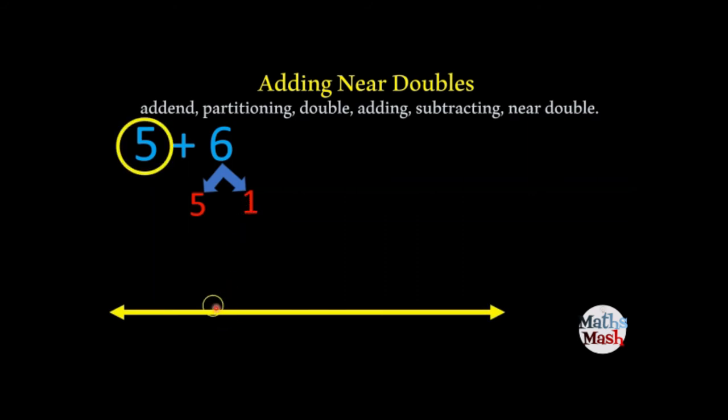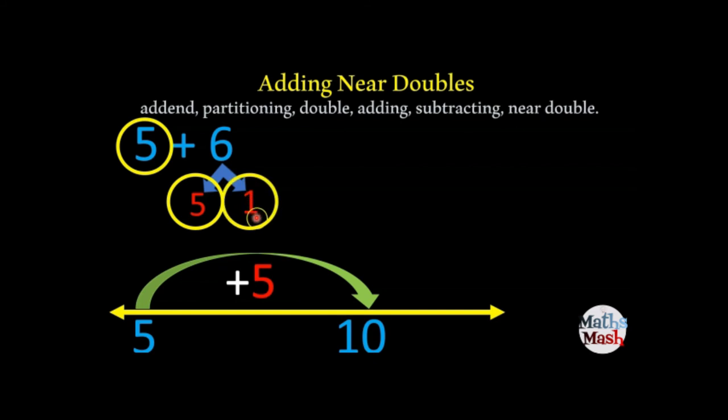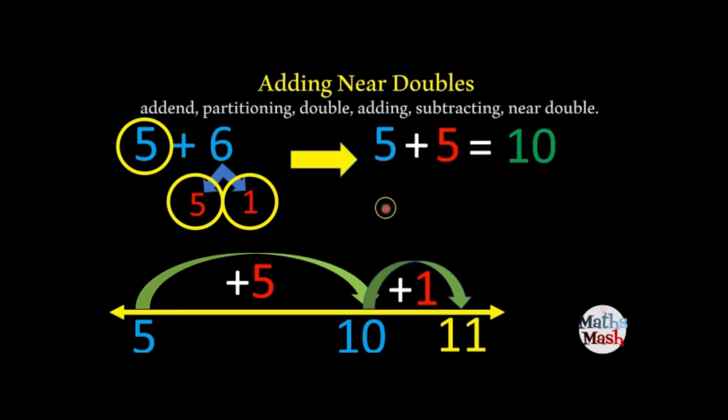So we have 5 plus 6 and we've partitioned it into 5 and 1. We draw a nice straight number line and we take this 5 and we put it down here on the number line. Now we're going to take this second 5 and we're going to make a jump of 5, and that's going to put us here at 10 because that's what we know. We know 5 plus 5 makes 10. But now we're going to add on this 1. So we're going to have another hop of 1 and that's going to put us at 11. And that's how you add near doubles. So quick review: 5 plus 5 equals 10, and then you just count on 1 and that makes 11.